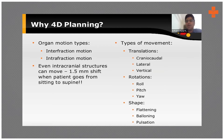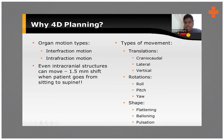To capture all this data, we use 4D planning — the fourth dimension being time. Over a particular set of time, how much the tumor is moving is captured as a series of serial scans, all combined to generate an integral target volume. Translational movements like craniocaudal, lateral, and vertical, as well as rotational movements like roll, pitch, and yaw, can all be read through 4D planning and utilized to properly plan radiation risk zones.